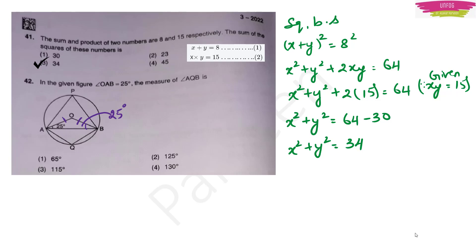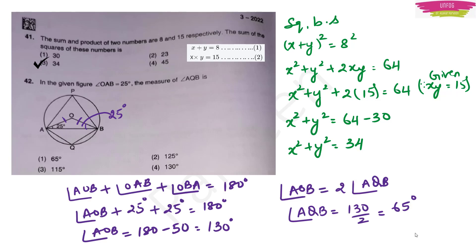In the given figure, angle OAB = 25°. Since OA and OB are both radii of the same circle, the triangle is isosceles, so angle OBA = 25° as well. The sum of angles in triangle AOB gives angle AOB = 180° − 25° − 25° = 130°. By the theorem that the central angle is twice the inscribed angle, angle AQB = 130°/2 = 65°.